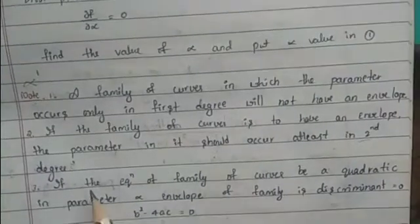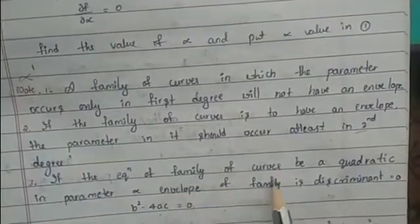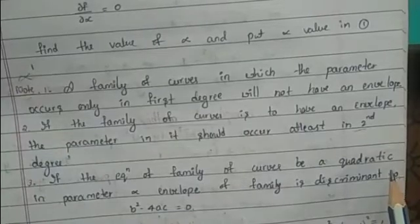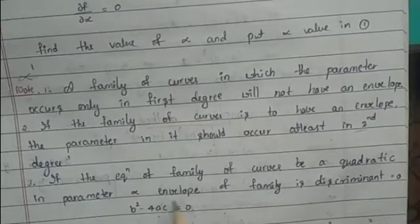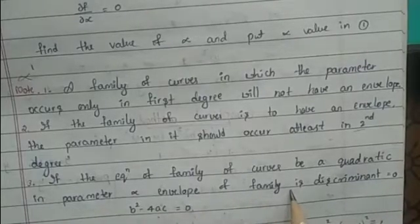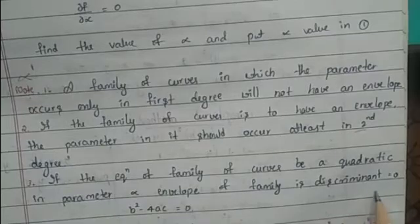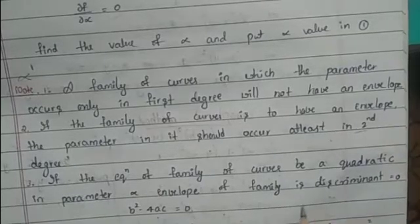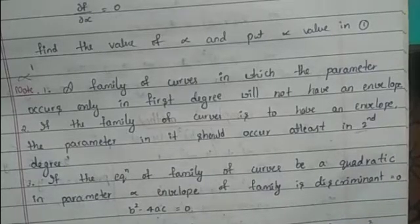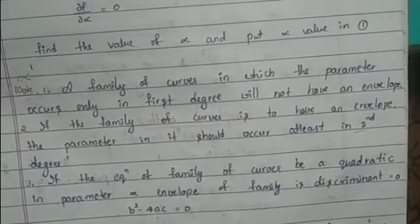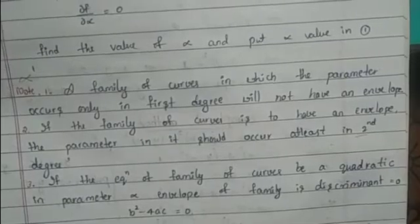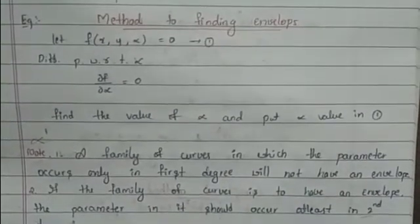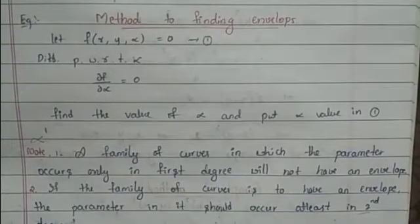The next point: if the equation of the family of curves is a quadratic in the parameter α, the envelope of the family is given by the discriminant, that is b² − 4ac = 0. This is the working procedure for finding the envelope.